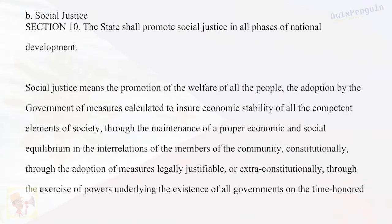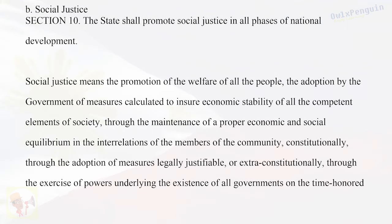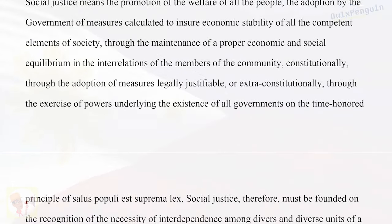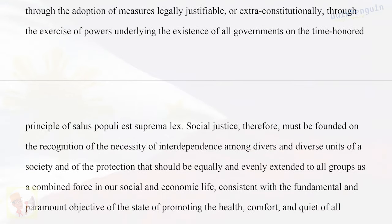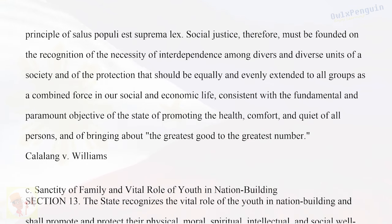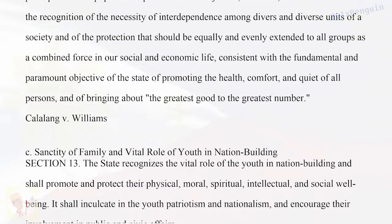B. Social Justice — Section 10: The state shall promote social justice in all phases of national development. Social justice means the promotion of the welfare of all the people, the adoption by the government of measures calculated to ensure economic stability of all the competent elements of society, through the maintenance of a proper economic and social equilibrium in the interrelations of the members of the community — constitutionally, through the adoption of measures legally justifiable, or extra-constitutionally, through the exercise of powers underlying the existence of all governments on the time-honored principle of salus populi est suprema lex. Social justice must be founded on the recognition of the necessity of interdependence among diverse units of a society and of the protection that should be equally and evenly extended to all groups, consistent with the fundamental objective of promoting the health, comfort, and quiet of all persons and of bringing about the greatest good to the greatest number. (Calalang v. Williams)